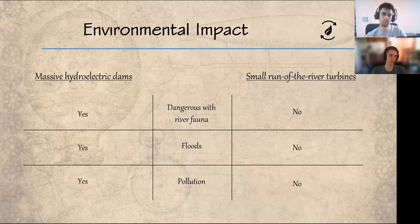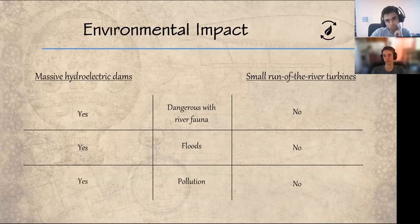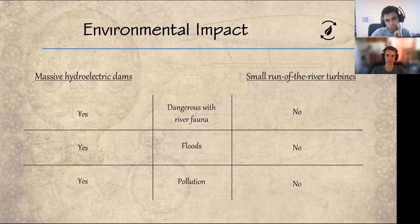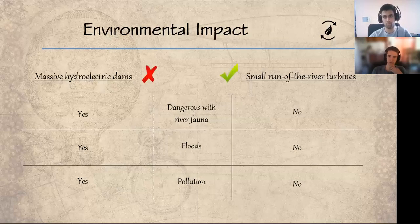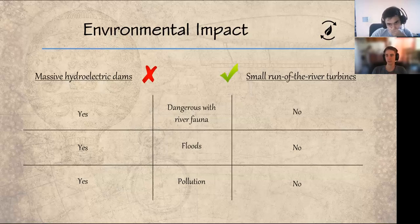As we can see from the table, a small-scale system like ours does not have any of these negative impacts because they don't have a dam or generate electricity. Also, as the turbines are especially built, they don't harm the fauna. Then we can say the integral pump turbine doesn't produce a significant environmental impact.